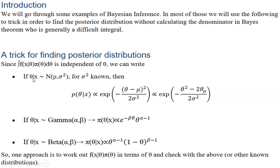If θ given x is normally distributed with mean μ and variance σ², then p(θ | x) is proportional to the exponential of −(θ − μ)² / 2σ², which simplifies to the exponential of −(θ² − 2θμ) / 2σ². If θ given x follows a Gamma(α, β) distribution, then π(θ | x) is proportional to the corresponding exponential term.